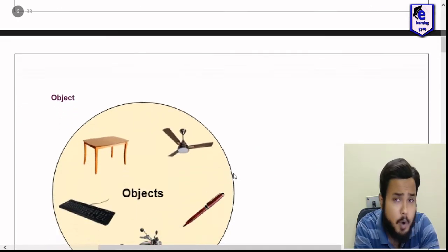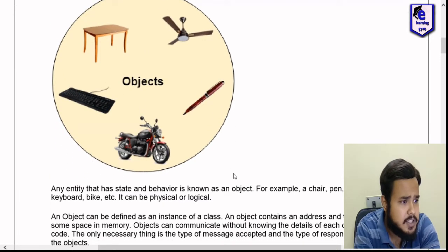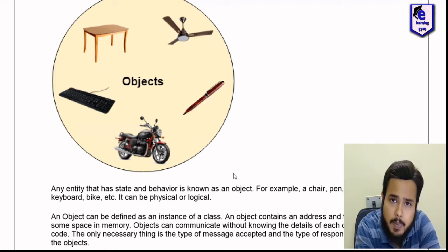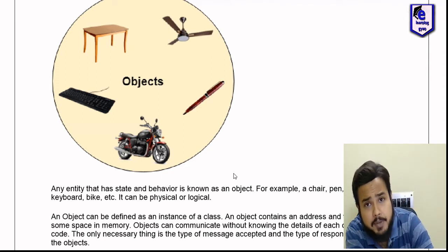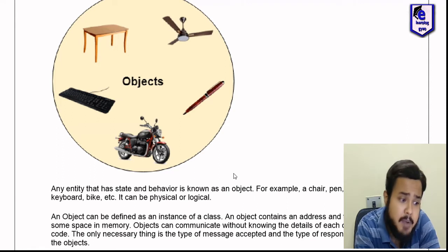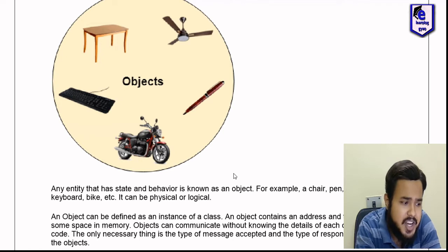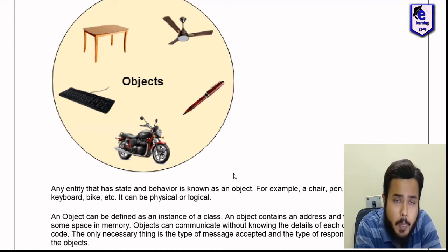First, that is object. Before we look at this picture — in this picture we have: one is table, one is fan, one is bike, and a keyboard. An object shares a state and the behavior. Any entity that has a state and behavior is known as an object. For example, a chair, paint, table, keyboard, bike, etc.